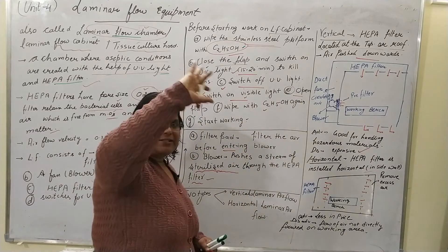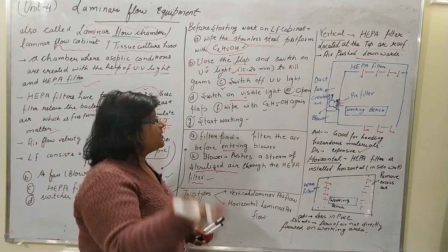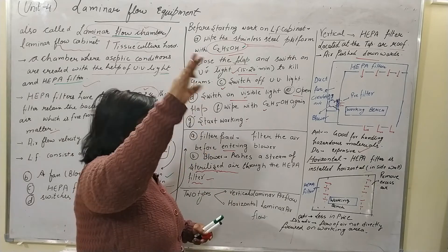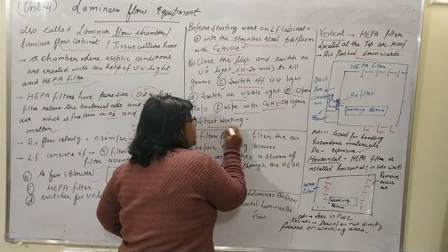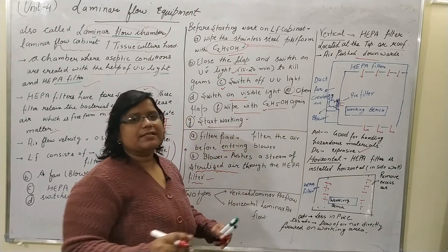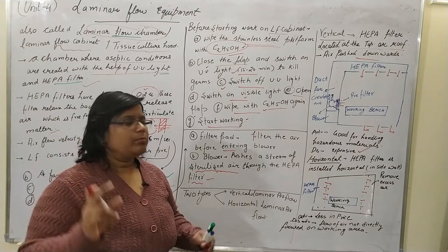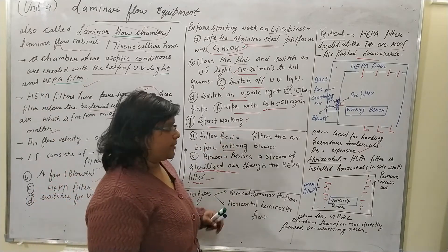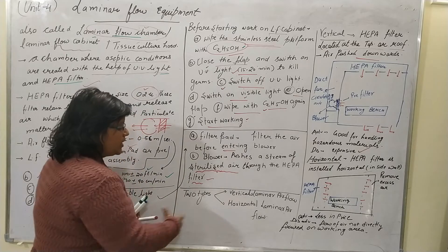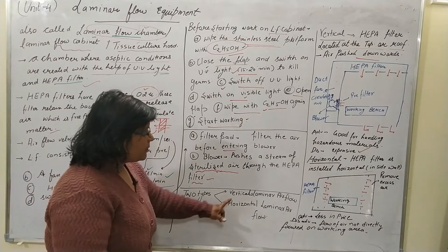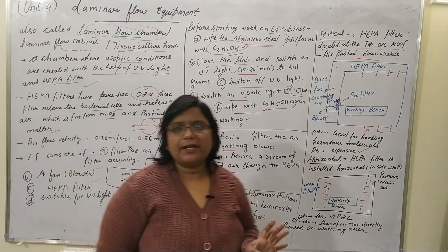Now open the flap of the chamber, wipe again with ethyl alcohol, switch on the blower, and start working.